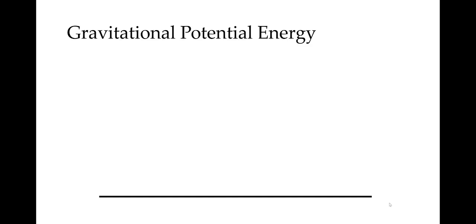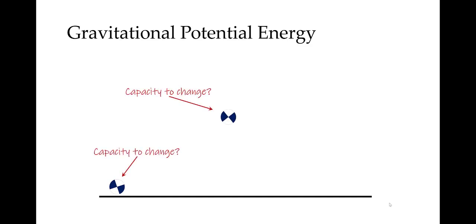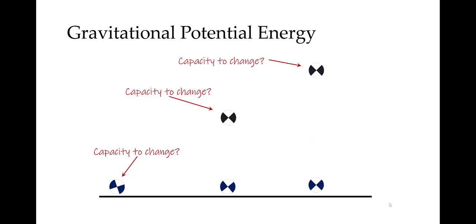Gravitational potential energy is the energy associated with position. If something is sitting on the ground, it's not changing, nor does it have the potential to change. If we raise it up, now it has the potential to change—all we have to do is release it. If we were to raise it higher, then it has a greater capacity to change. So the higher we raise something off the ground, the more potential energy it has.